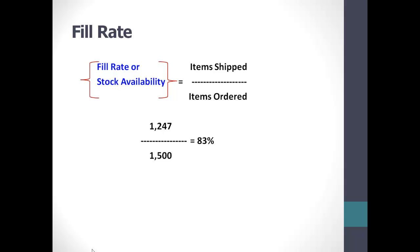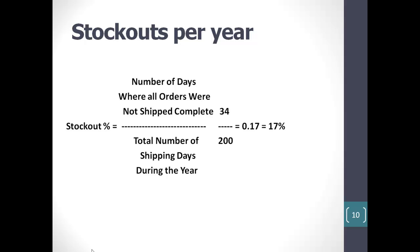A simple example: the formula is items shipped divided by items ordered. If we shipped out 1,247 items and 1,500 items were ordered, we have an 83% fill rate. You could do this for a single day, for the entire year, or for a grouping of items. To figure out stock-outs on an annual basis, you would divide the number of days where all orders were not shipped complete, divided by the total number of days where orders were shipped complete.